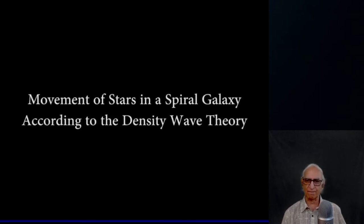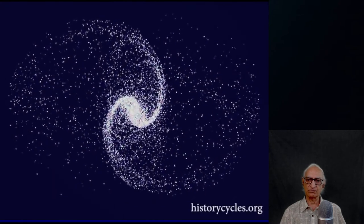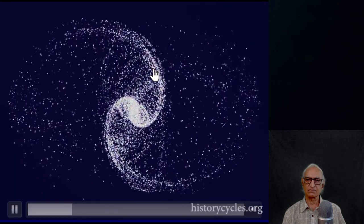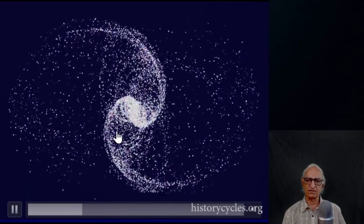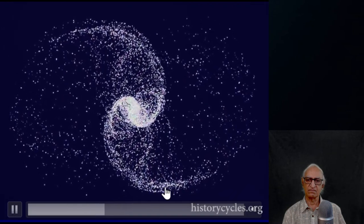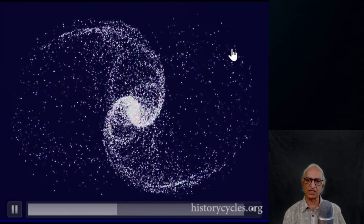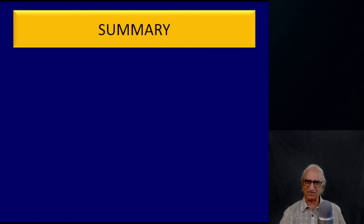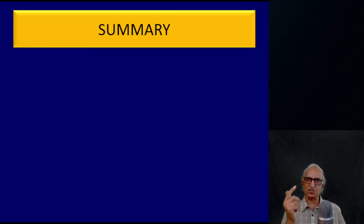Let us look at a very spectacular demonstration. In that simulation, you can clearly see the stars moving outwards — and then they fall back in, otherwise the galaxy would disappear. The simulation clearly shows that the spiral density wave helps in the transport of angular momentum outwards.